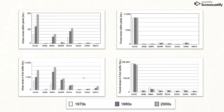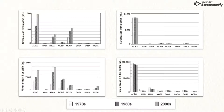We can see this illustrated further in these graphs. On the left, we have graphs of urban areas within and near parks, and we can see from 1970 to the 2000s there's an increase in those urban areas. On the right, we see forest areas within and near parks. The forested areas within the parks did not change too much over the past 30 years; however, we do see a decrease in forested areas within or within five kilometers of each park boundary.